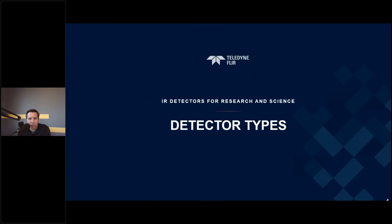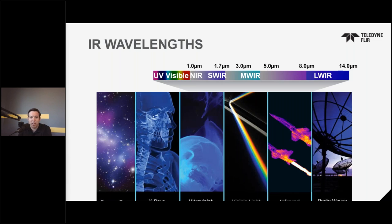Moving on to the different detector type review. Before diving into the actual detectors, let's talk about the electromagnetic spectrum and where we fit. Most of you are very familiar with the visible spectrum. It runs at a few hundred nanometer wavelengths — three or four hundred or so — up to about 900 nanometers. Our cameras are going to operate in the infrared spectrum located at wavelengths longer than the visible spectrum. At FLIR, that begins at around one micron wavelength, with true thermal bands beginning at about three micron.